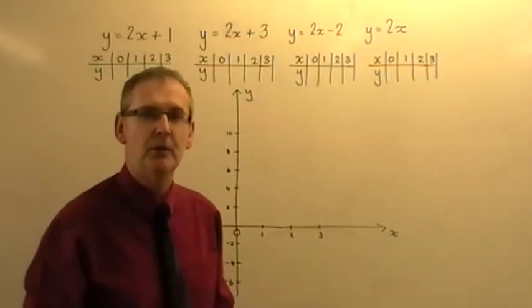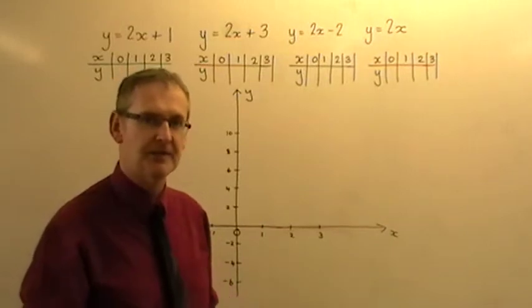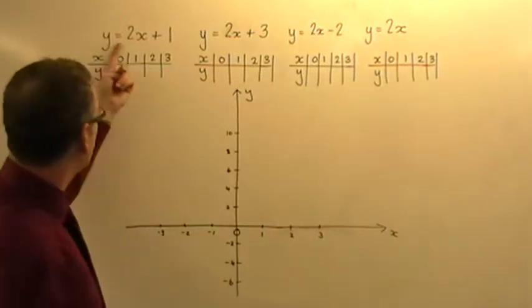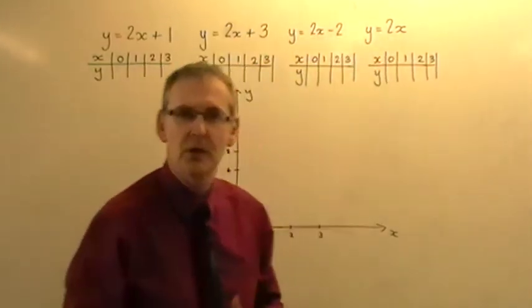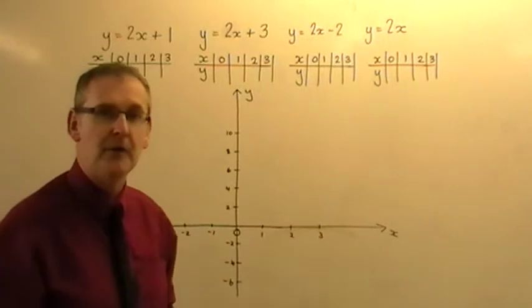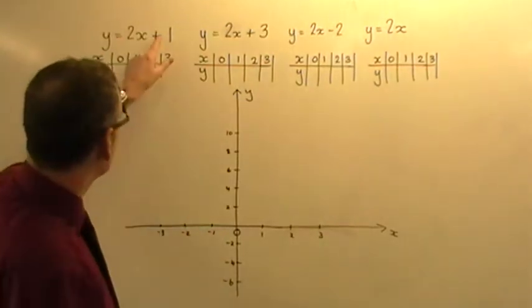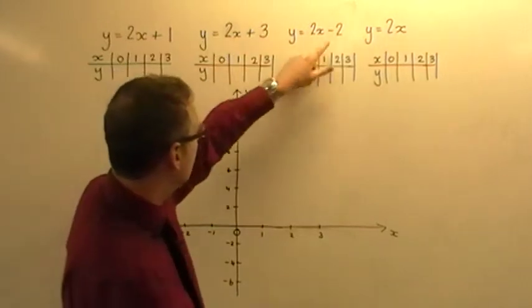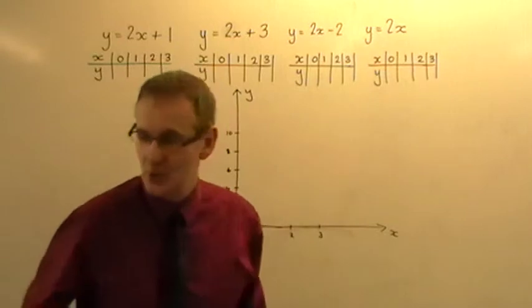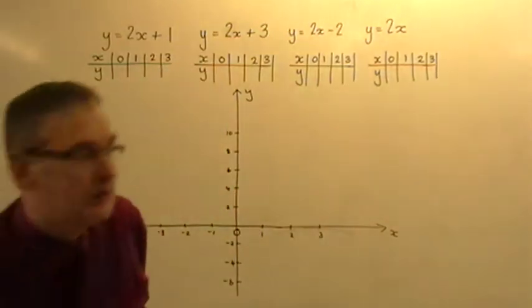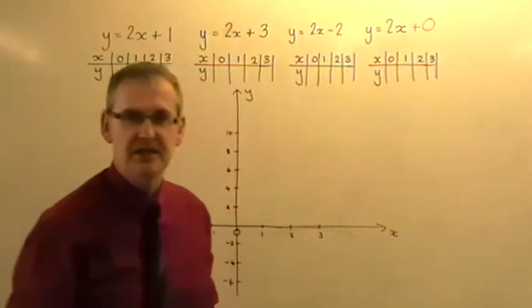I'm going to do what we call a control experiment. For these four graphs, in each case y equals 2x is fixed in the equation, and all I'm doing is changing one thing, which is the number on the end: plus 1, plus 3, minus 2, and that one there does not have a number on the end, which in effect could be written as plus 0, but it doesn't actually need to be there.